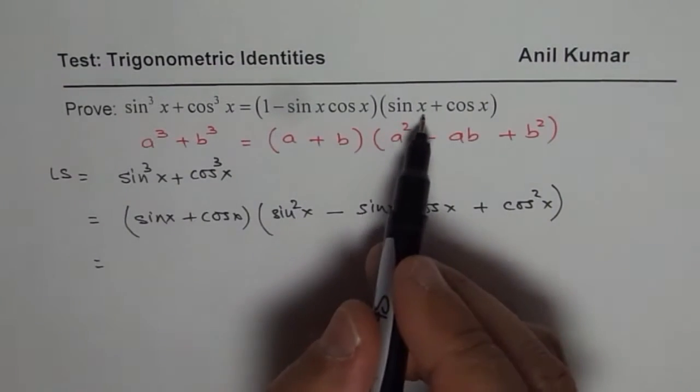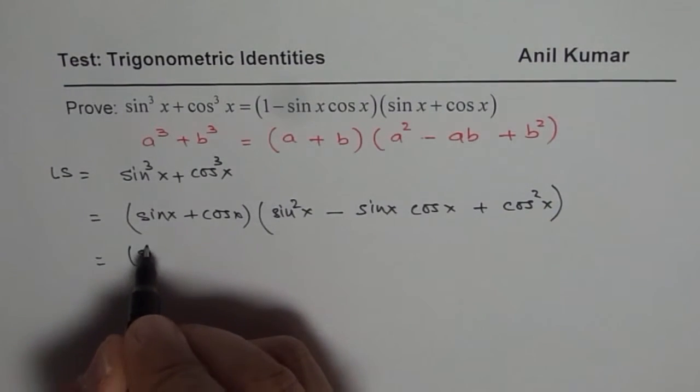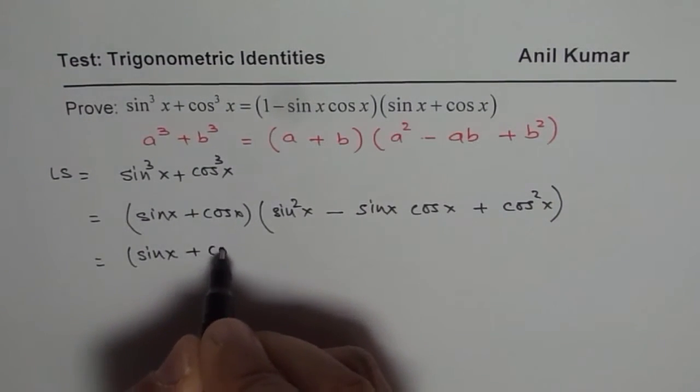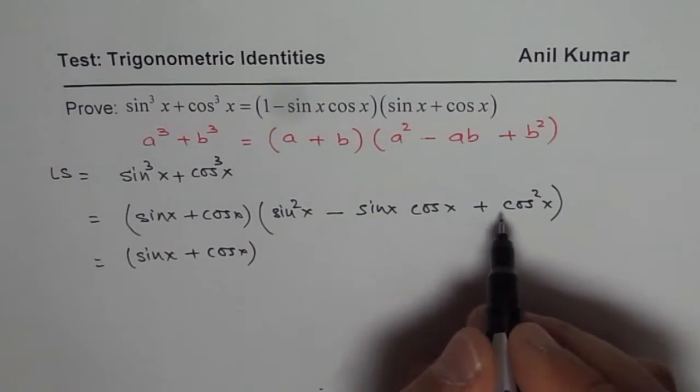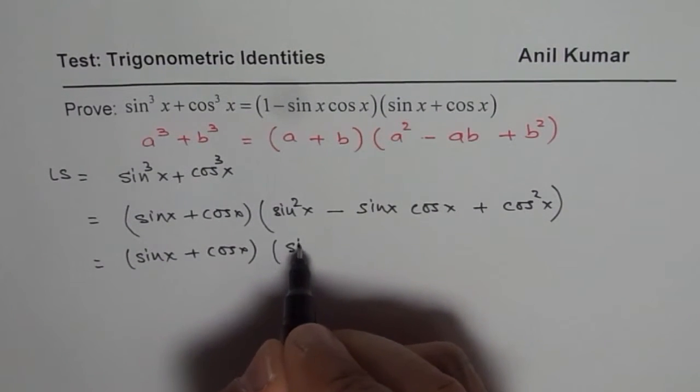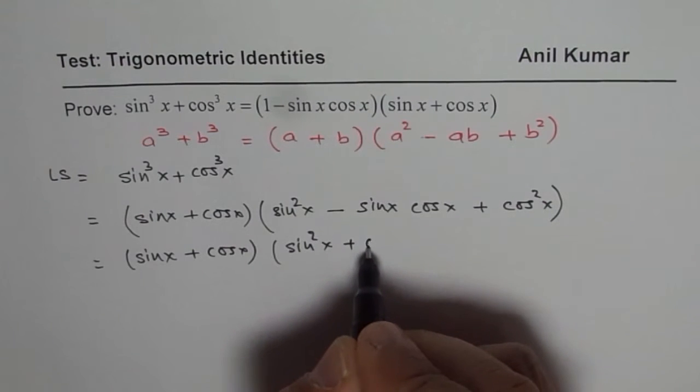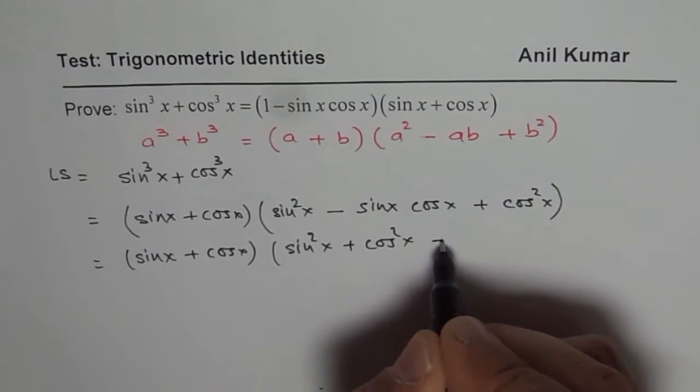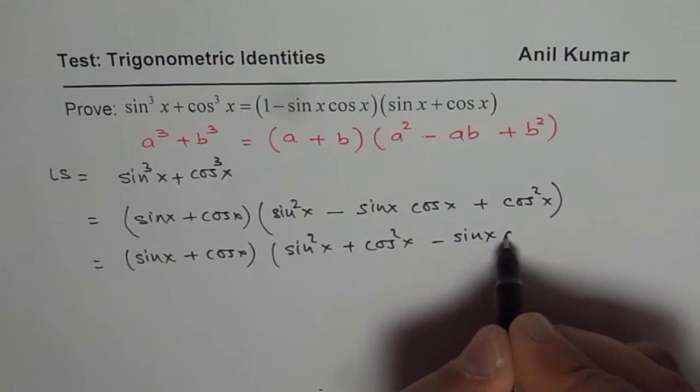Now we already have one of the terms, which is sin x + cos x. The other term we can rearrange, so we have sin²x + cos²x - sin x cos x.